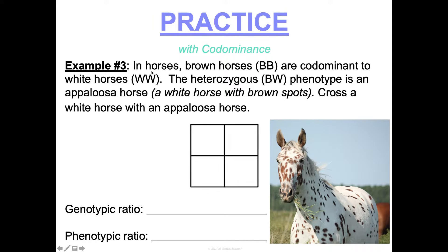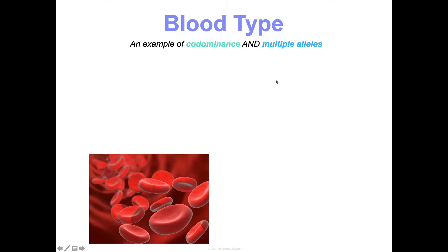Here's a codominance example with horses. Brown horses are codominant to white. Notice the notation: we use two different capital letters (B and W) — all caps because there's no true dominance. The heterozygous genotype (BW) produces the appaloosa phenotype, which is a white horse with brown spots. For this example, cross a white horse with an appaloosa horse.